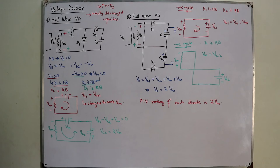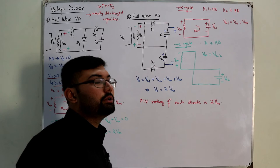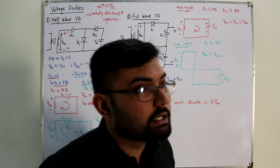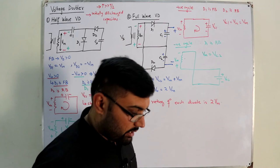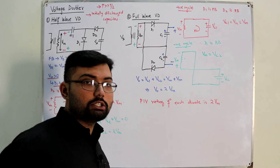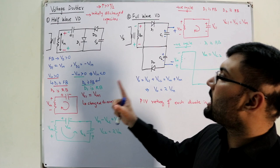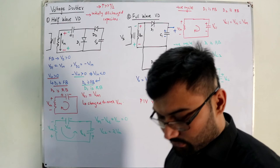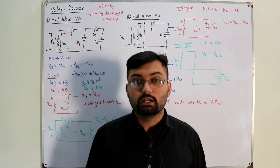Without center tapping you are getting 2×Vm at the output. So this was all about voltage doubler circuits — the input is sinusoidal, the output is a DC value with a peak twice that of the input. As a homework assignment: what is the difference between a half-wave voltage doubler and a full-wave voltage doubler? Hint — think about the ripple voltage. Let me know in the comments section. Till the next video, goodbye.